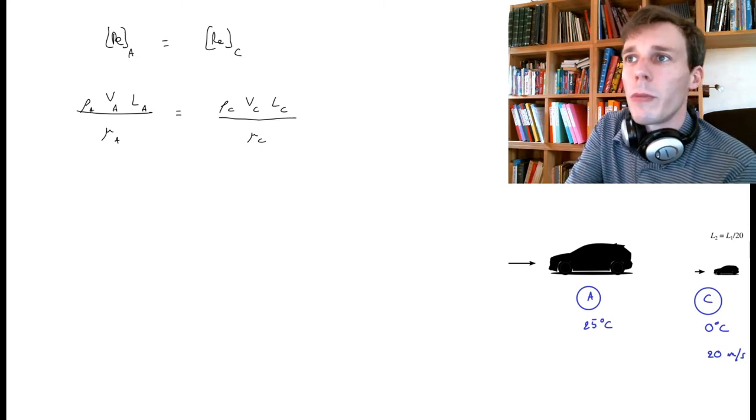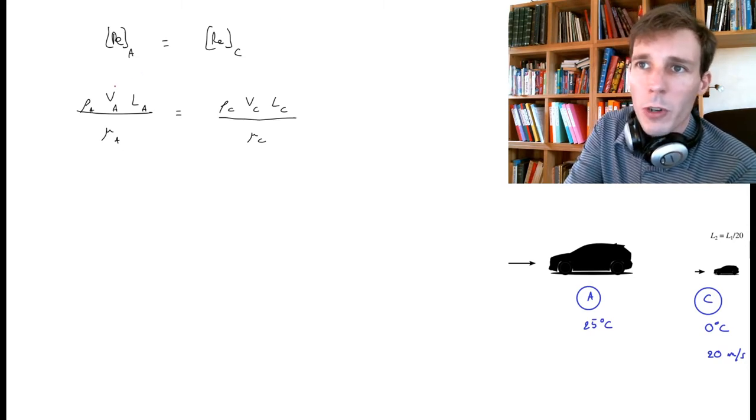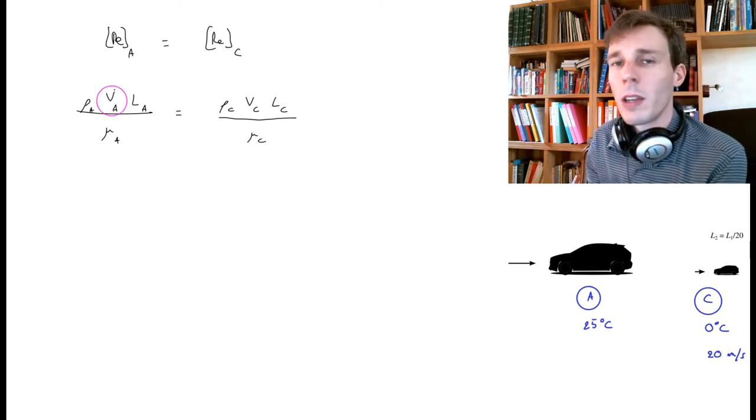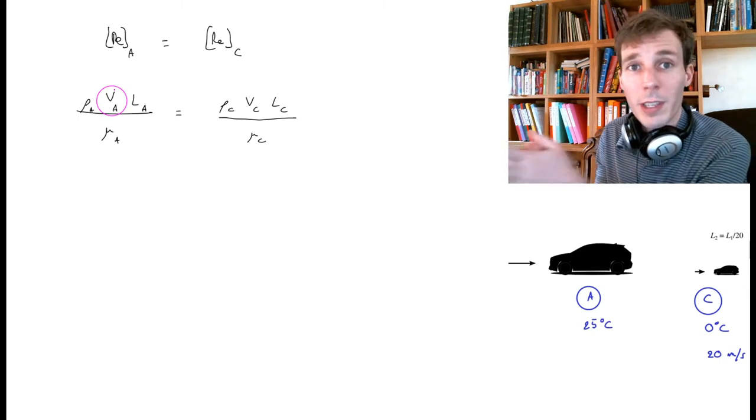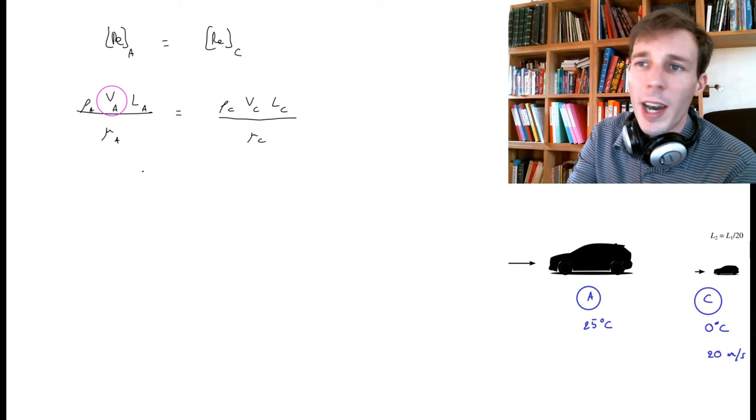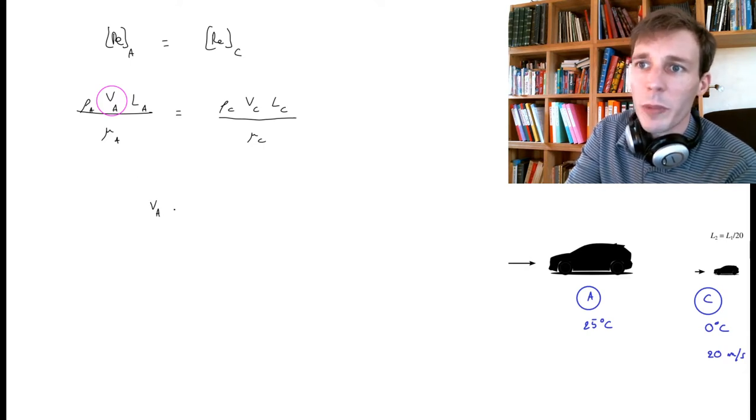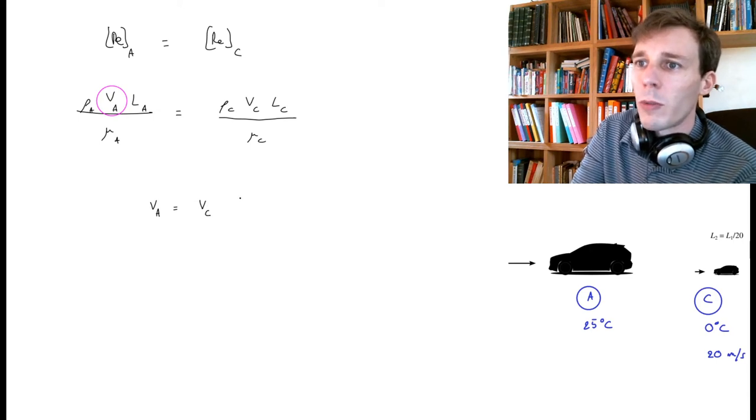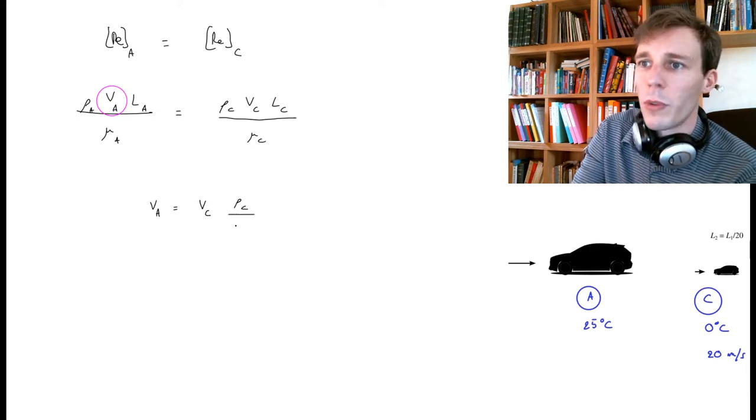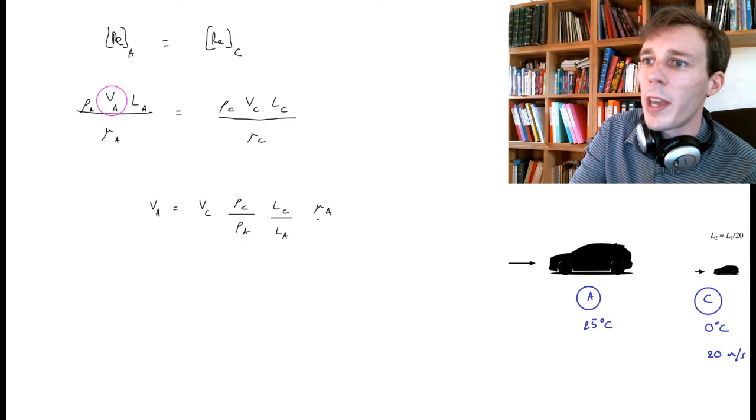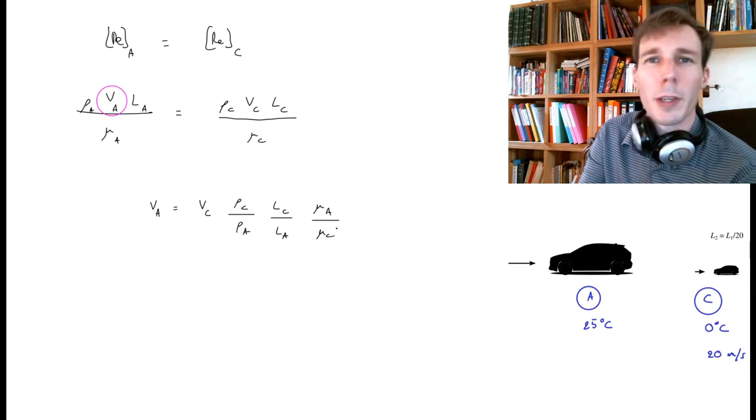What are we looking for in this problem? The parameter we are trying to identify is V_A. What is the velocity on the real car that we are simulating using this tiny model? We isolate this parameter as we did before. V_A is equal to V_C times ρ_C over ρ_A, L_C over L_A, and then μ_A over μ_C.